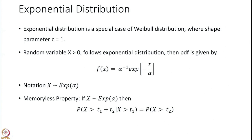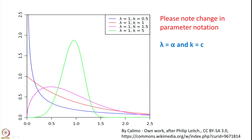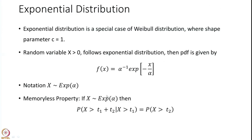There is one distribution — the exponential distribution — which is a very special case of Weibull distribution where the shape parameter is 1. The red-colored distribution in the Weibull plots is this special distribution called exponential distribution. The random variable x is greater than 0, the PDF has a specific form, and the notation is x distributed as exponential(alpha). I have purposefully left out the CDF — please derive the CDF of exponential distribution; it will be a good algebraic exercise for you.